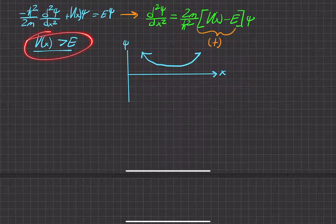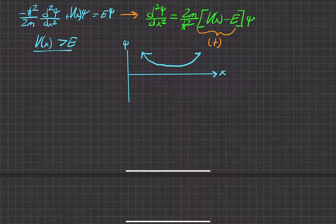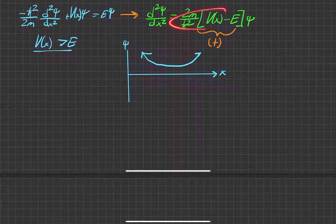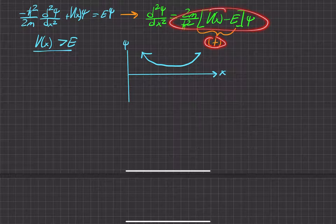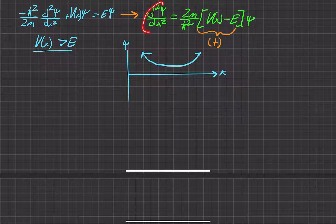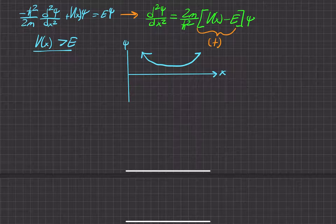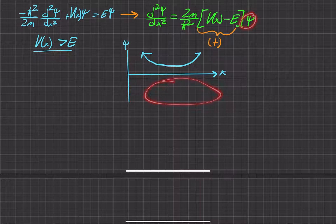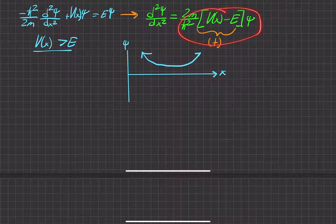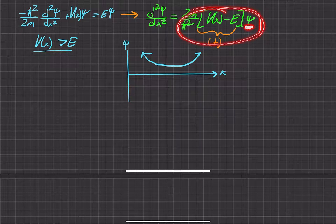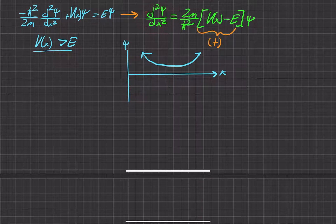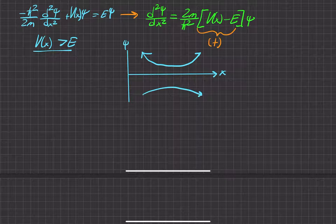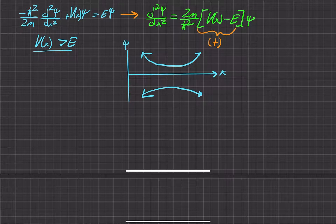Similarly, if we have a negative wave function, that means this whole term is going to be negative since the prefactor is still positive, which means the curvature is going to be negative. So for a negative wave function existing down here, the curvature is negative, meaning it's going to bend away from the x-axis — the spatial axis.